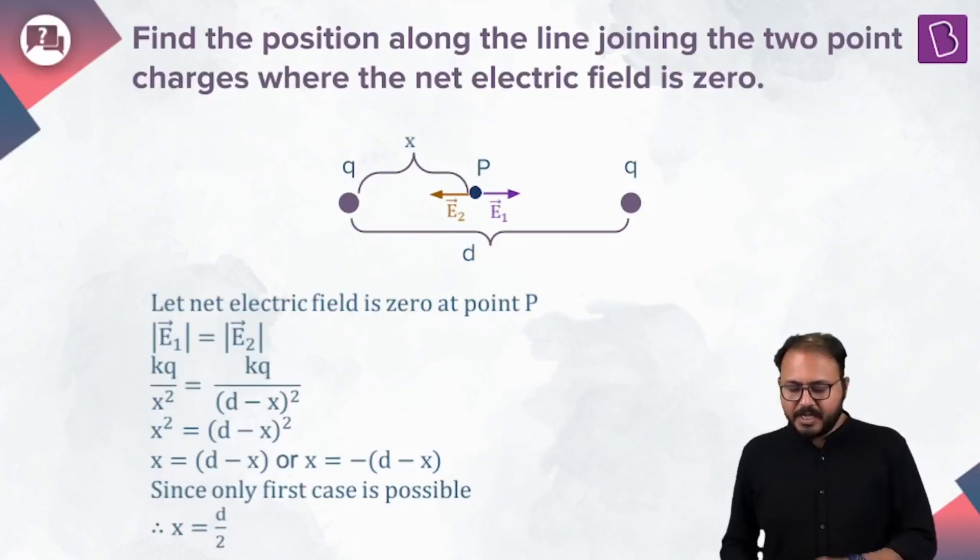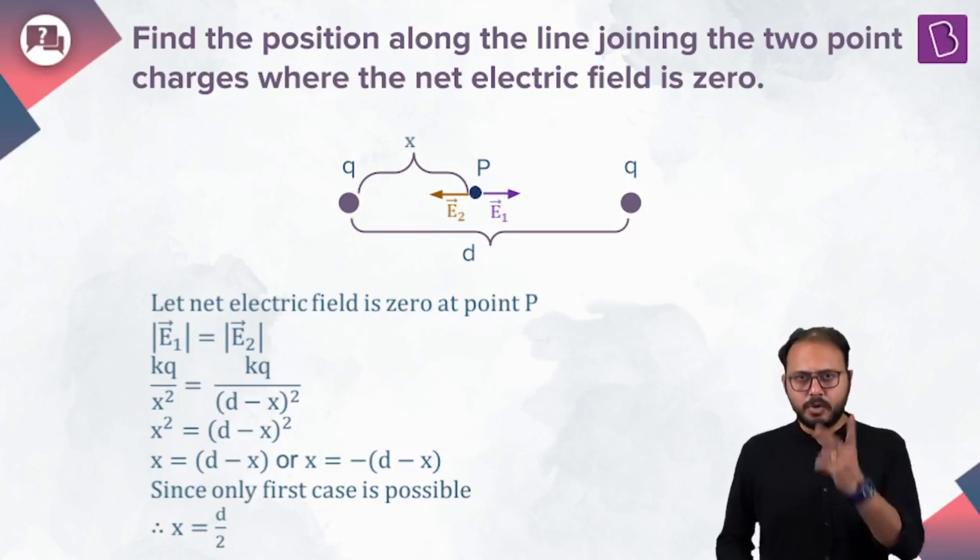Find the position along the line joining the two point charges where the net electric field is zero. Two positive charges? Check. Equal positive charges? Check.